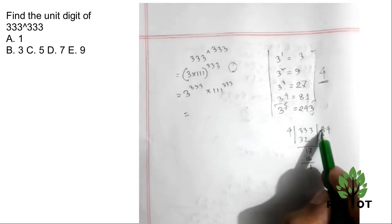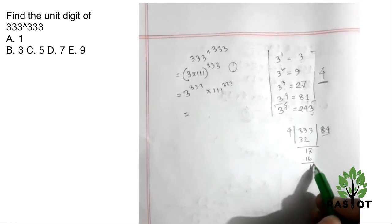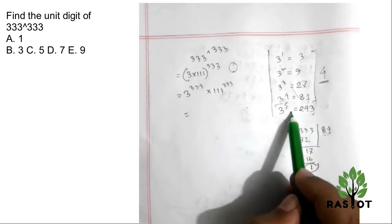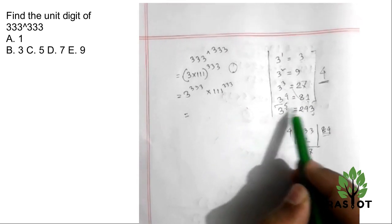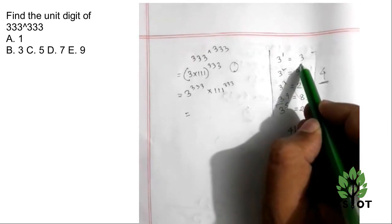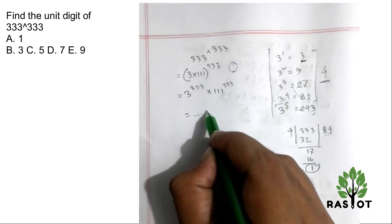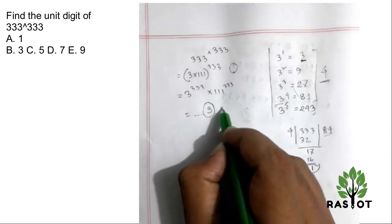We change to the first position of the pattern. The remainder is 1, so we're at the first period. So where is the 3? The 3 is at the first position, unit digit is 3.